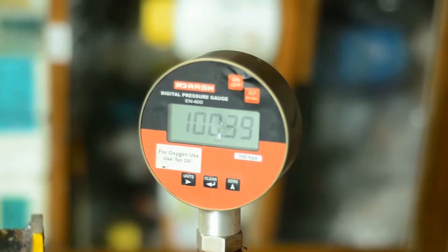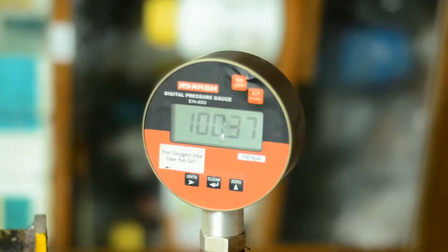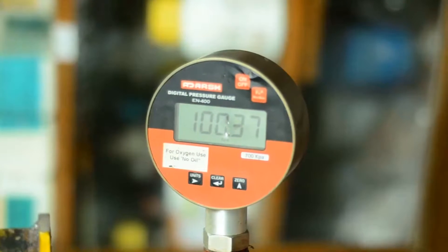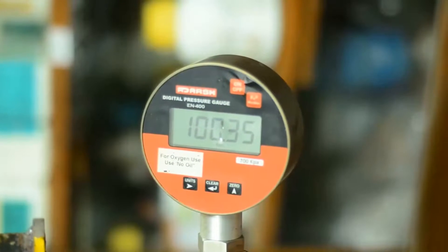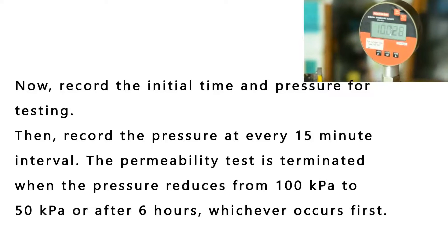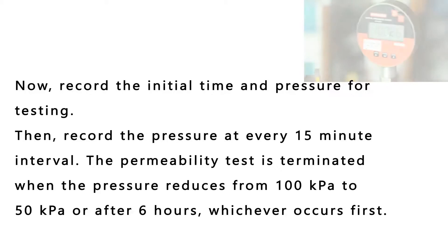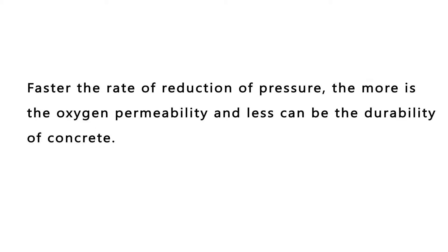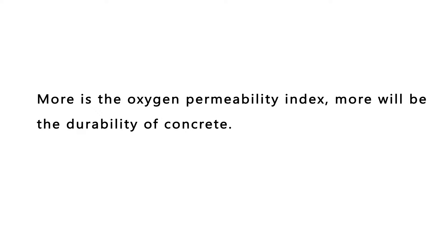Once the assembly is confirmed leak-free, record the initial time and pressure for testing. Then record the pressure at every 15-minute interval. The permeability test is terminated when the pressure drops from 100 to 50 kPa, or after 6 hours, whichever occurs first. The faster the rate of pressure reduction, the more the oxygen permeability and the less the durability of the concrete. A higher oxygen permeability index indicates greater durability.